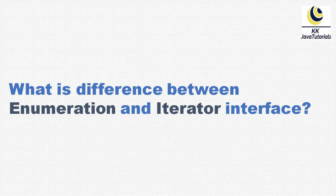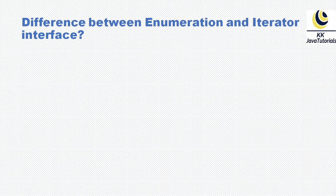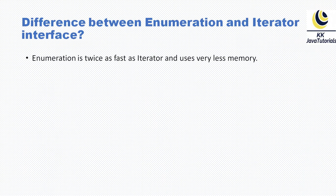Let us try to understand the difference between these two interfaces based on the functionality as well as provided methods. The first difference is that Enumeration is twice as fast as Iterator and uses very less memory.